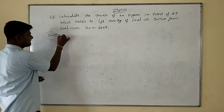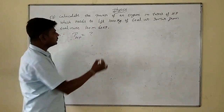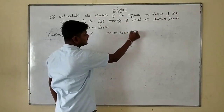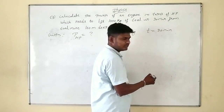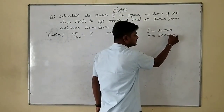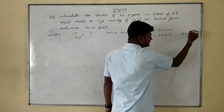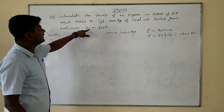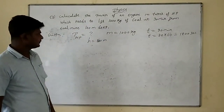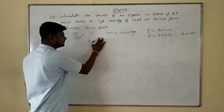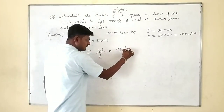Given: mass is 1000 kg. We need to find power in HP. The engine lifts 1000 kg in 30 minutes. Since minutes are not SI units, we convert: 30 × 60 equals 1800 seconds. Height is 100 meters deep. Power equals work done by time taken, which is MGH divided by time taken.